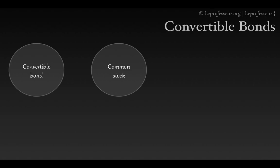We know that stocks are risky — the price may go up or down. We also know about fixed income securities like regular bonds, which receive fixed income regardless of whether the stock price goes up or down. Now, can we combine these two concepts together?